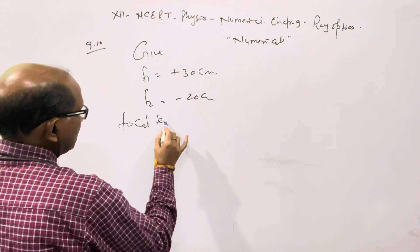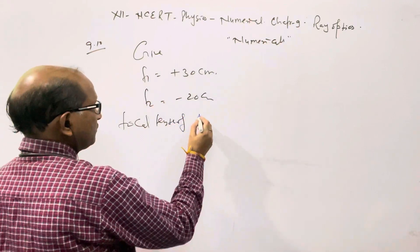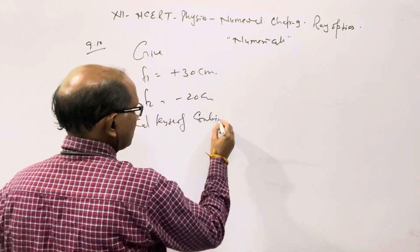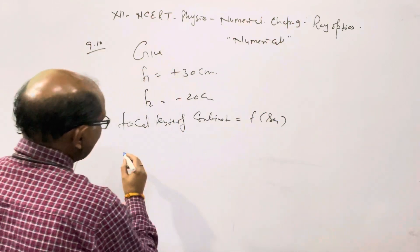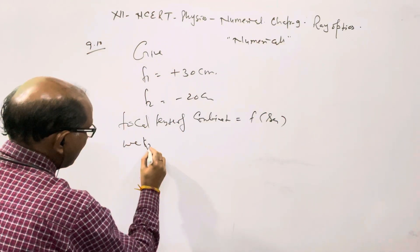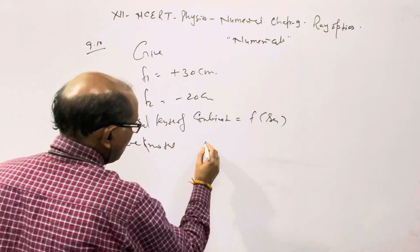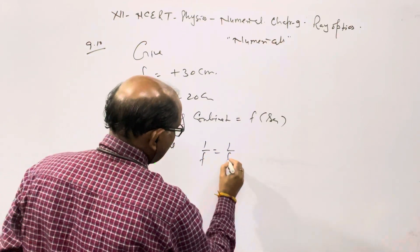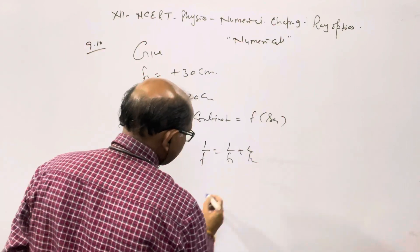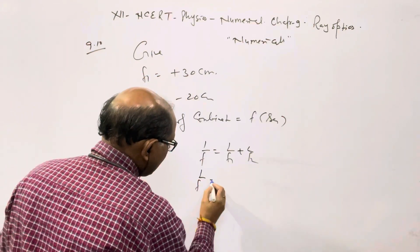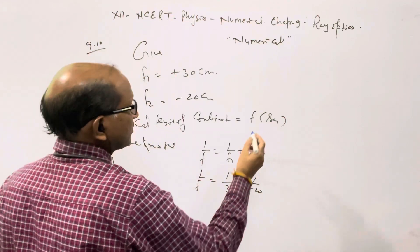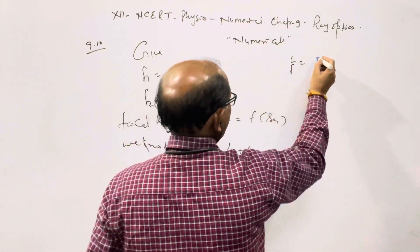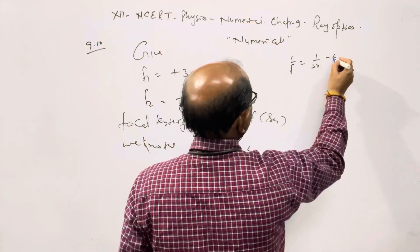For the focal length of the combination, we use the formula: 1/f = 1/f1 + 1/f2. So 1/f = 1/30 + 1/(-20), which gives us 1/f = 1/30 - 1/20.